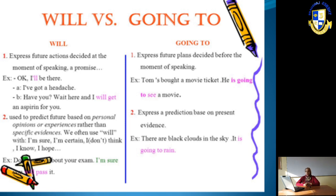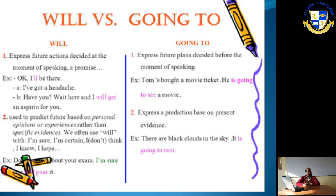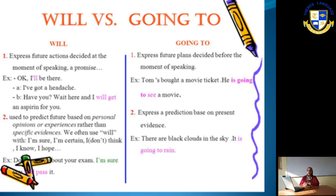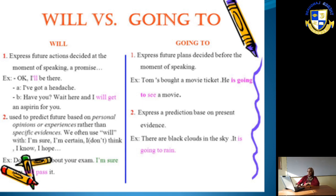For example: 'I'll be there,' or 'I've got a headache — wait here and I will get you an aspirin.' This means you are talking about something and taking an action right now, telling someone what you will do straight away. Secondly, we also use 'will' to predict the future.